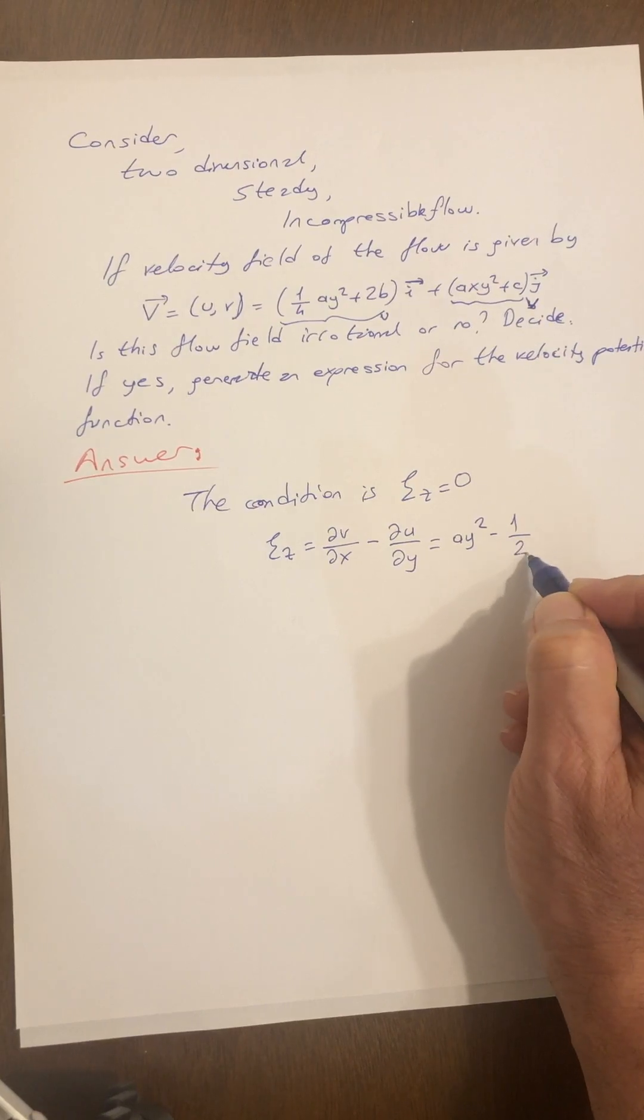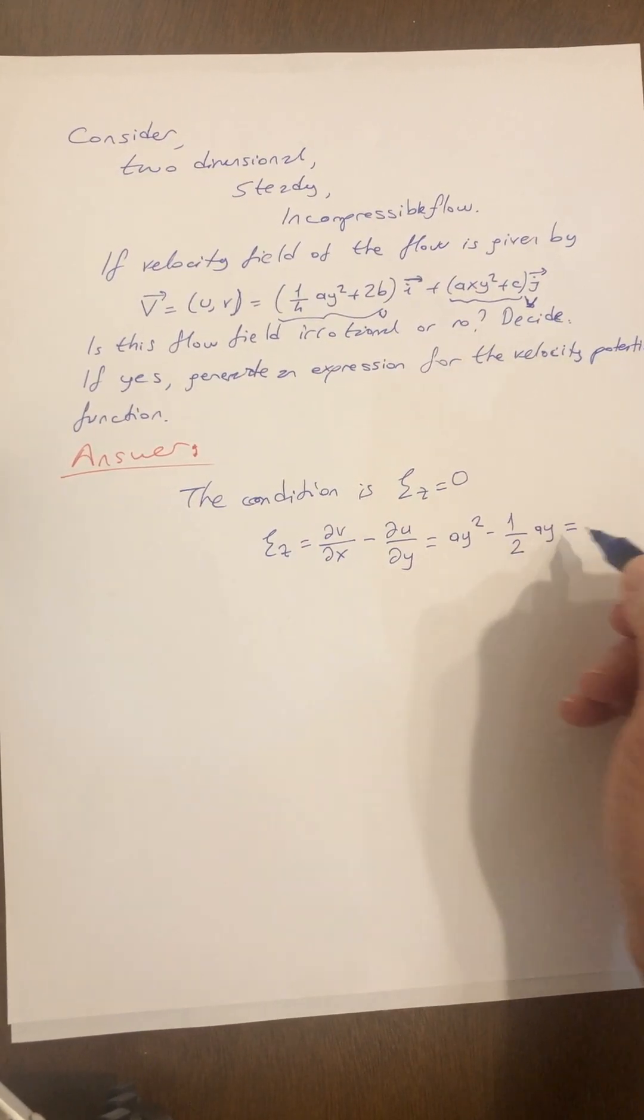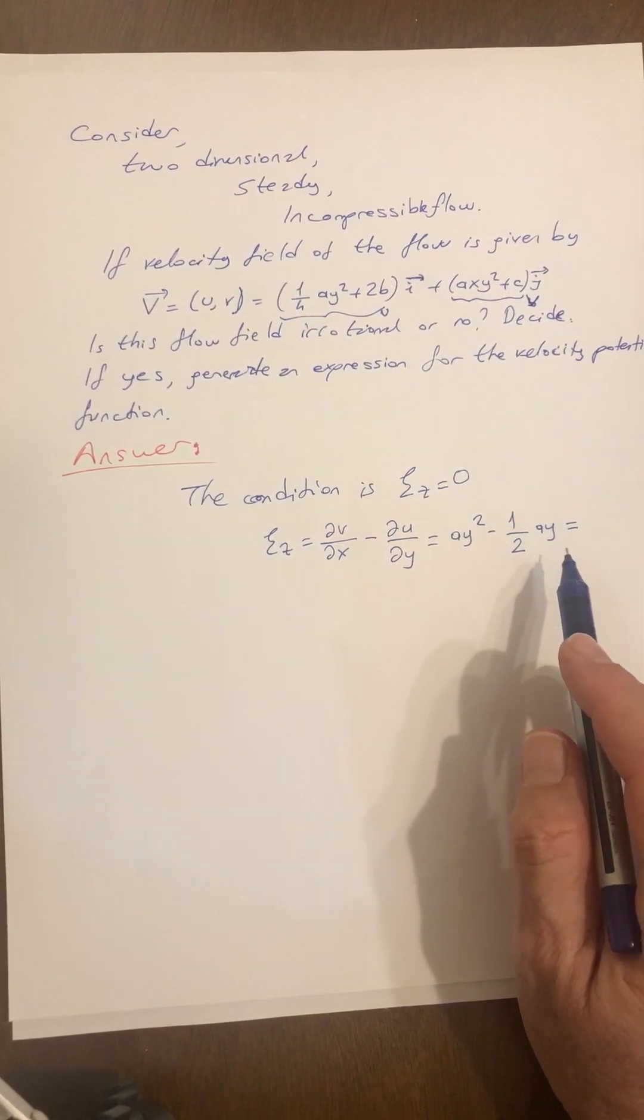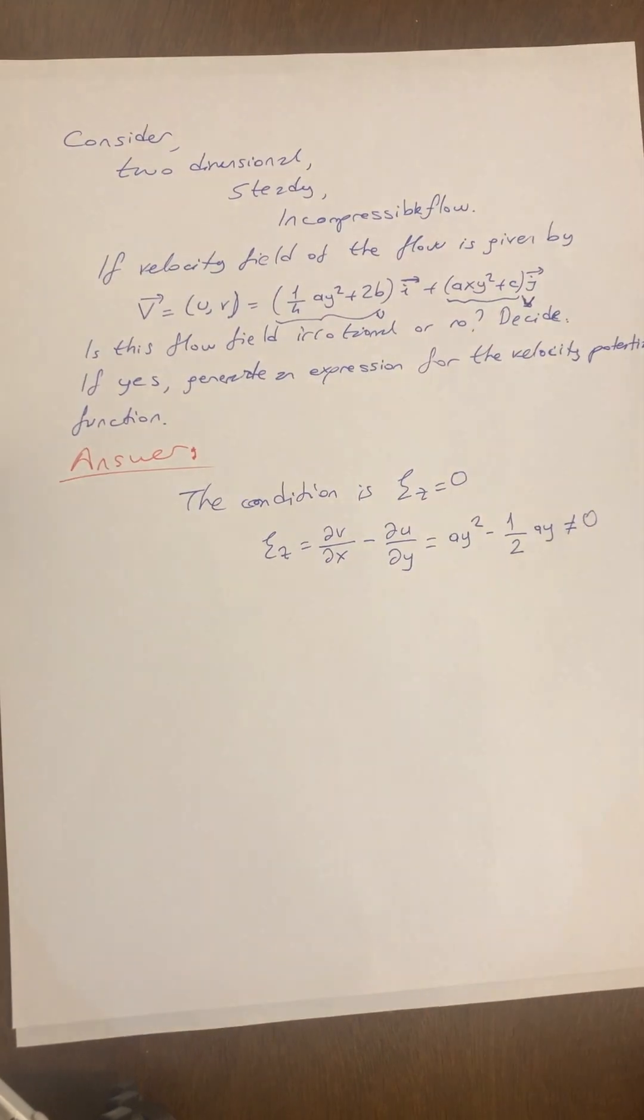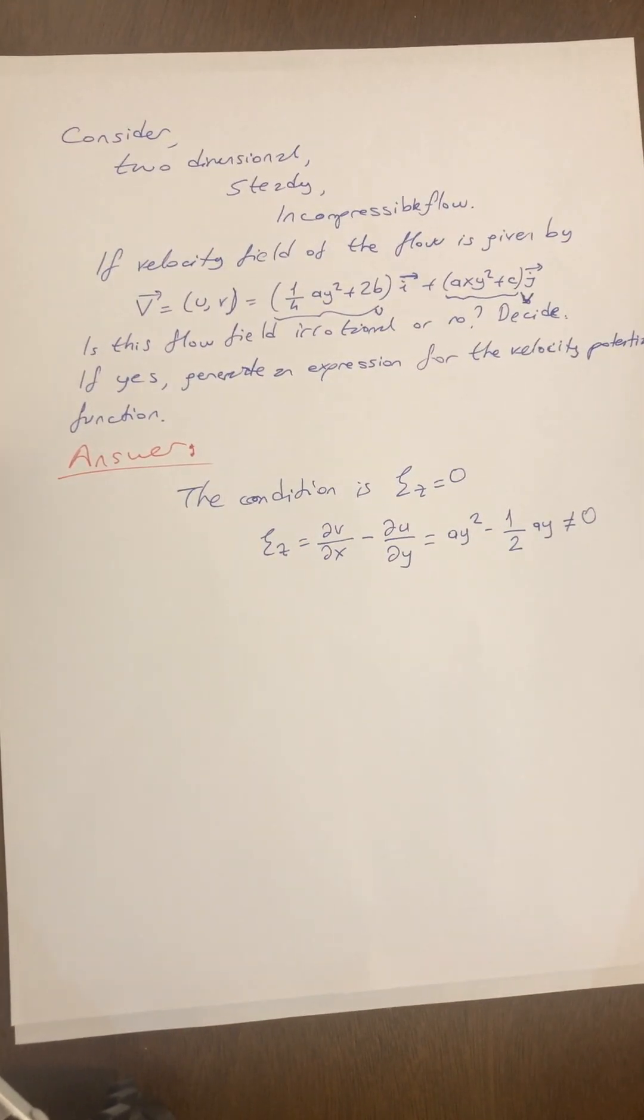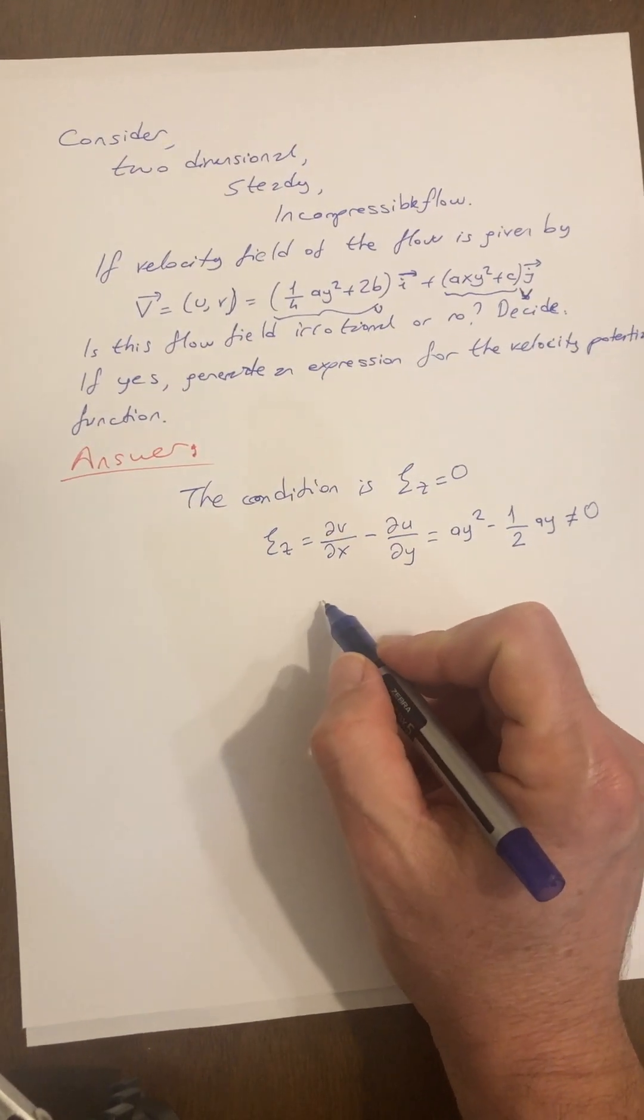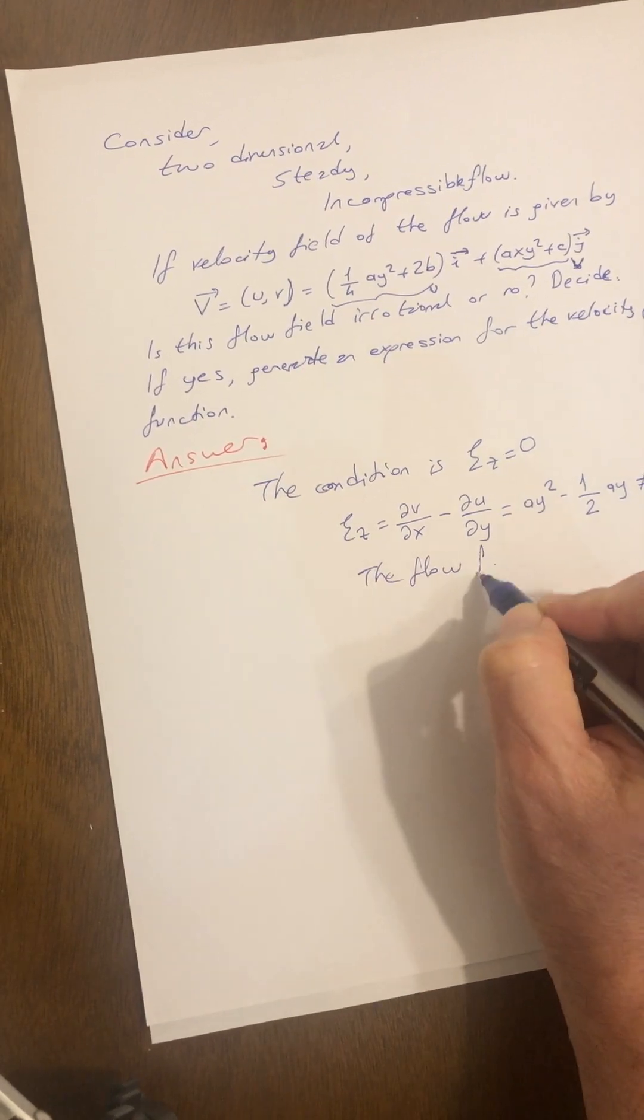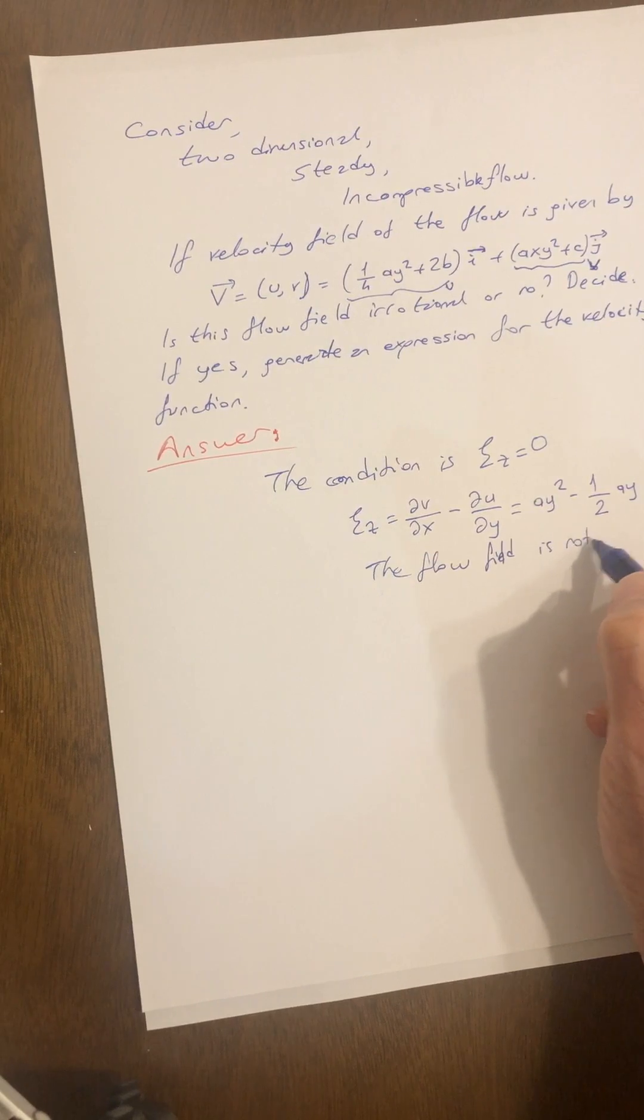1 by 2 ay. As you see, this operational mathematical operation is not equal to zero. In other words, we can say that the flow field cannot be considered as irrotational, so the flow field is not irrotational.